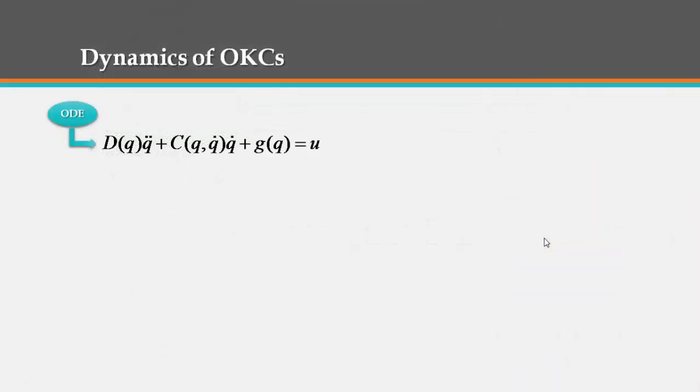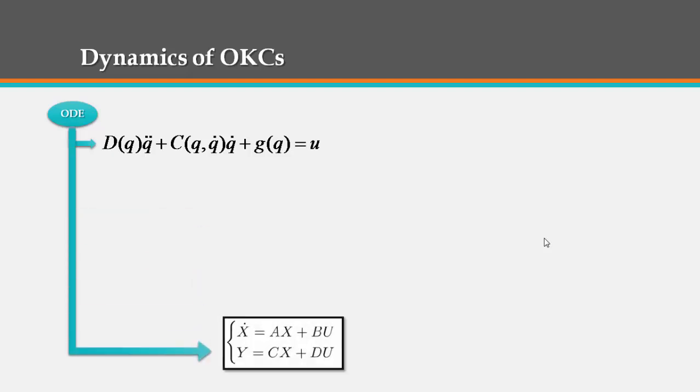The standard model for the dynamics of an open kinematic chain is given by the following set of ordinary differential equations. By this way, an explicit state space form can be easily used where the stability results for many control schemes are well established.